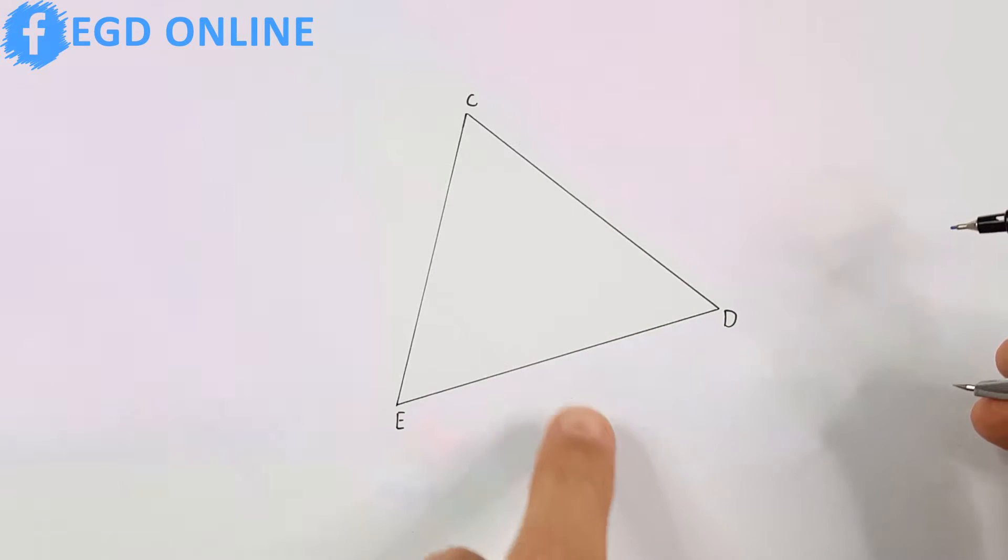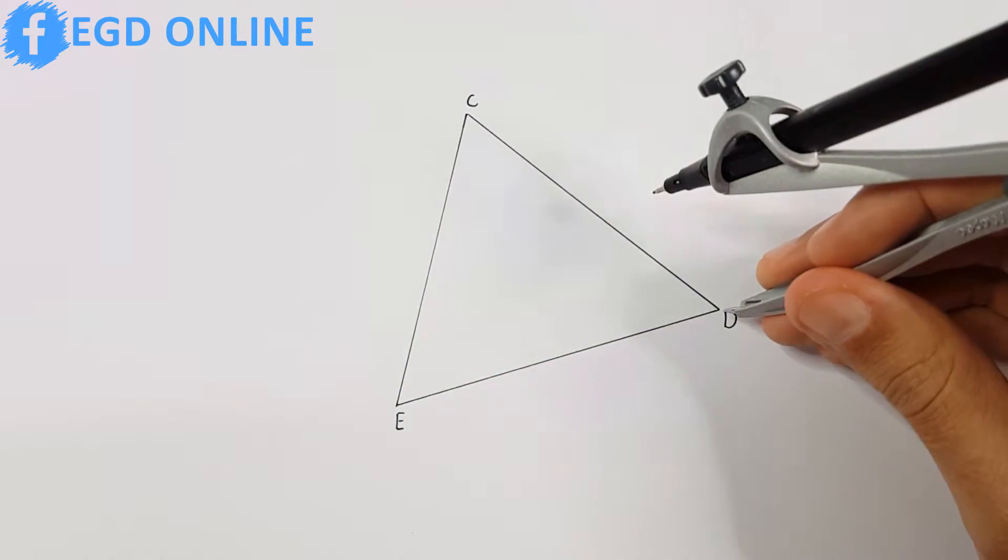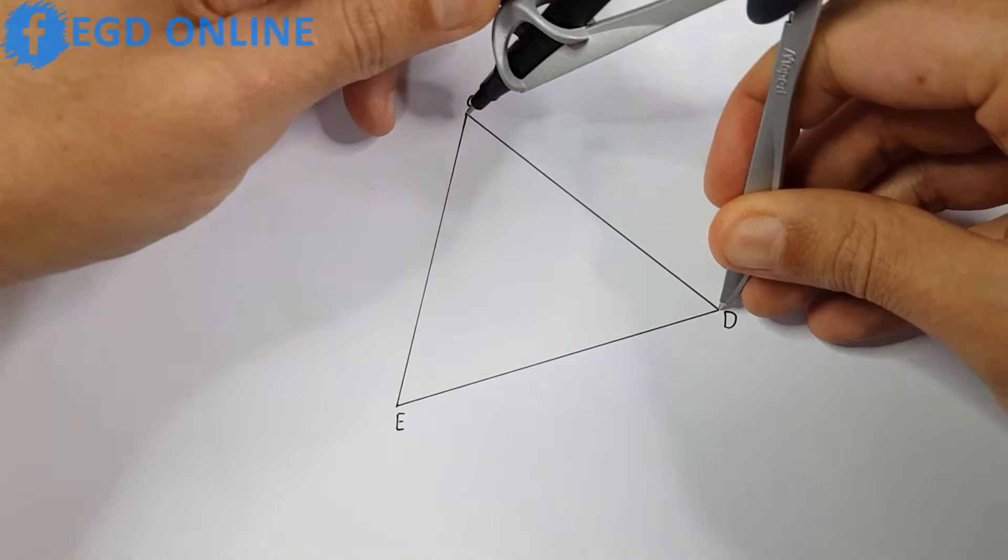For this method, you will require your compass. You are going to have to divide two of your three sides of your triangle using the middle point method.